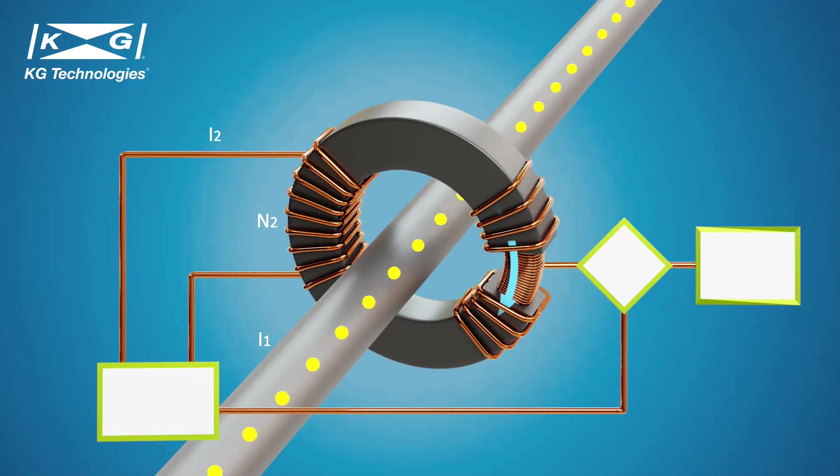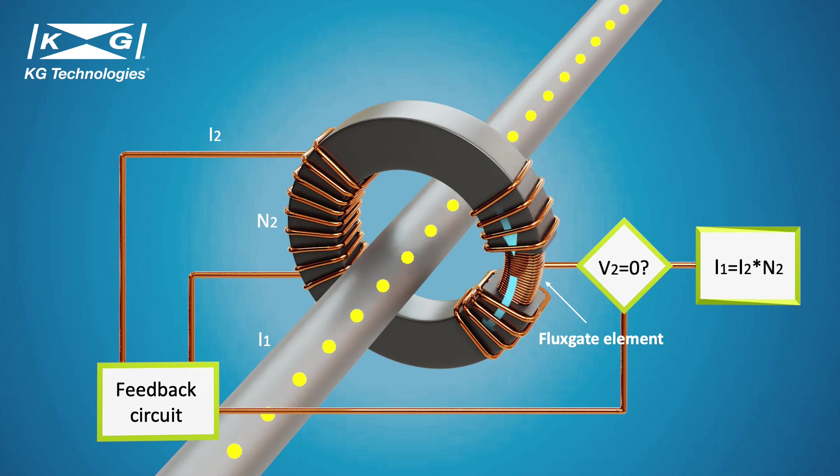A closed-loop fluxgate current sensor will have a feedback circuit to improve performance. The fluxgate element is placed in the air gap. The current output is re-injected through a secondary winding. The feedback current will then generate a magnetic field on the opposite direction. Once the total flux at the fluxgate reaches zero, primary current can be calculated based on the turns ratio. By doing so, it can solve the offset and linearity issues.